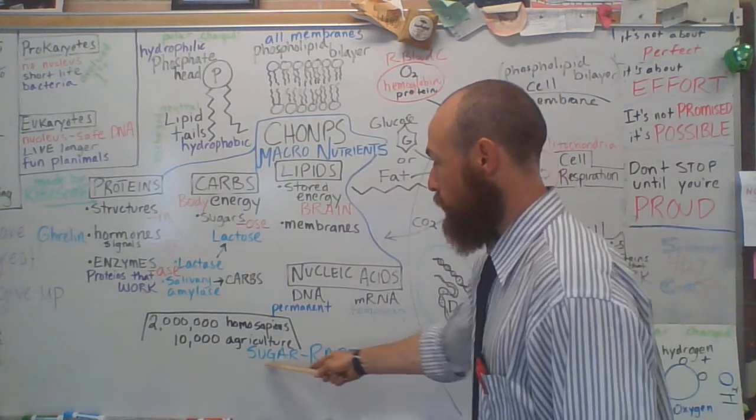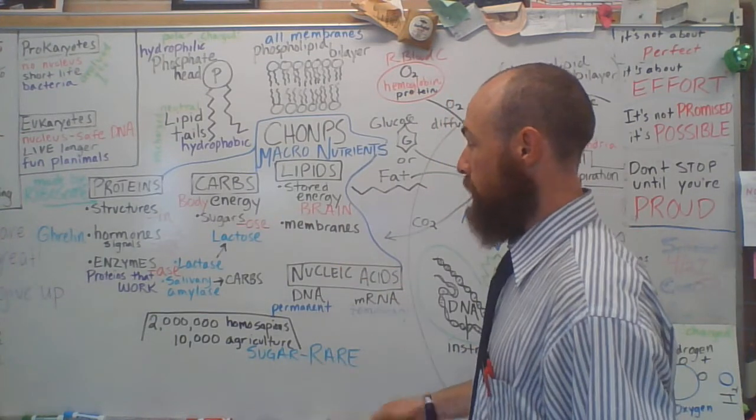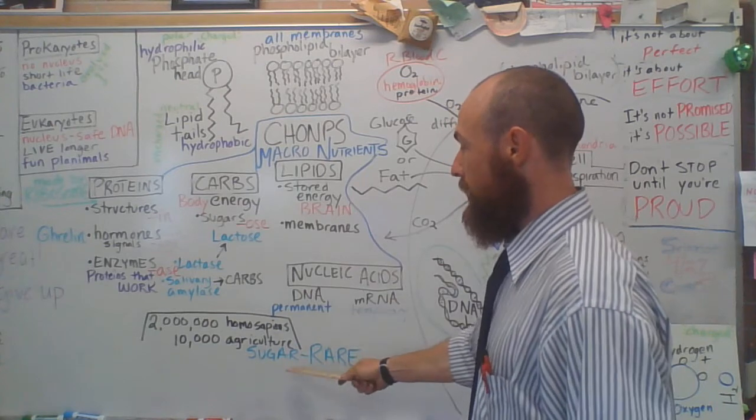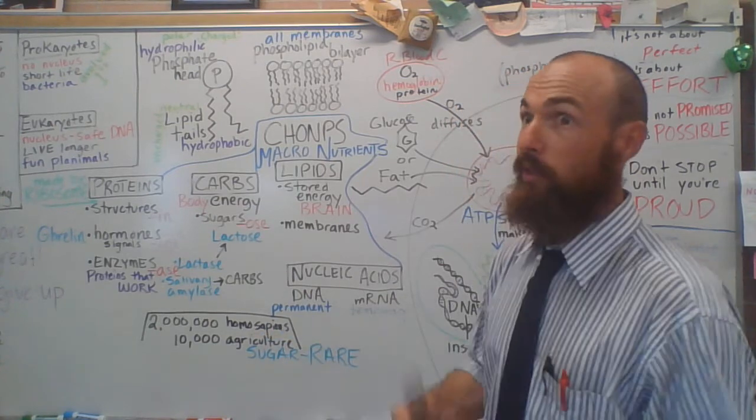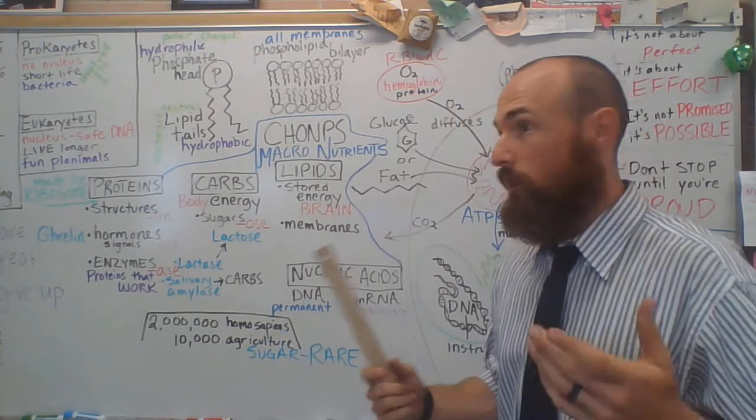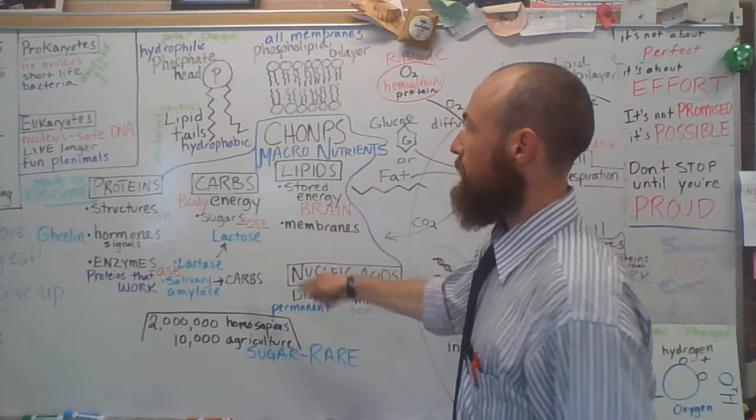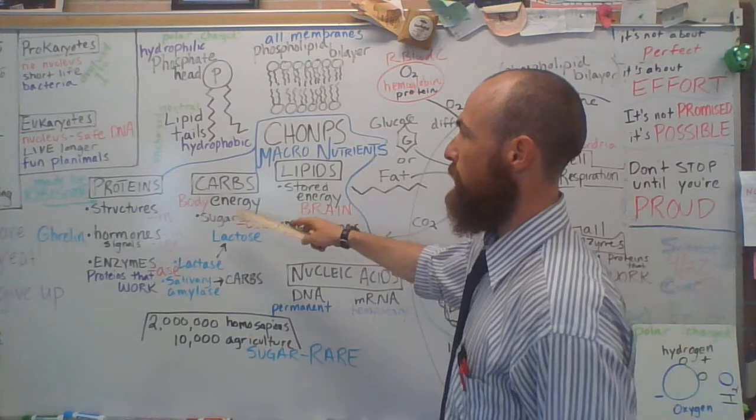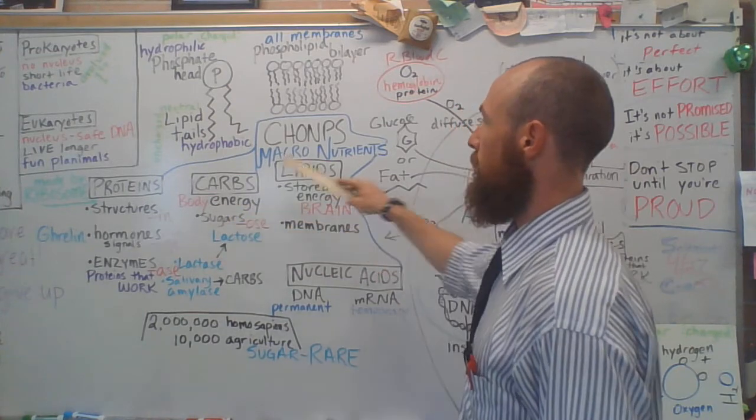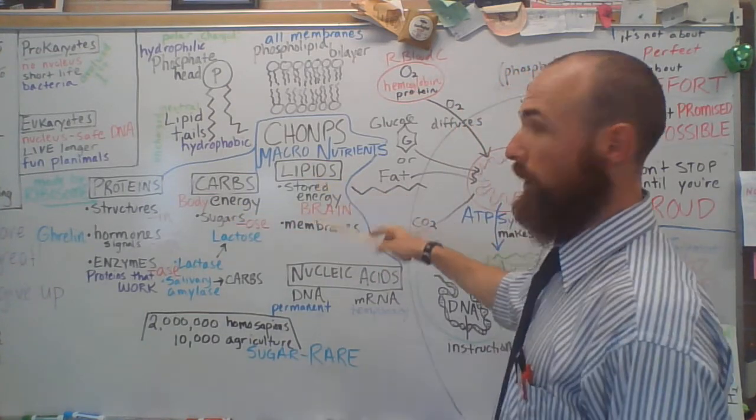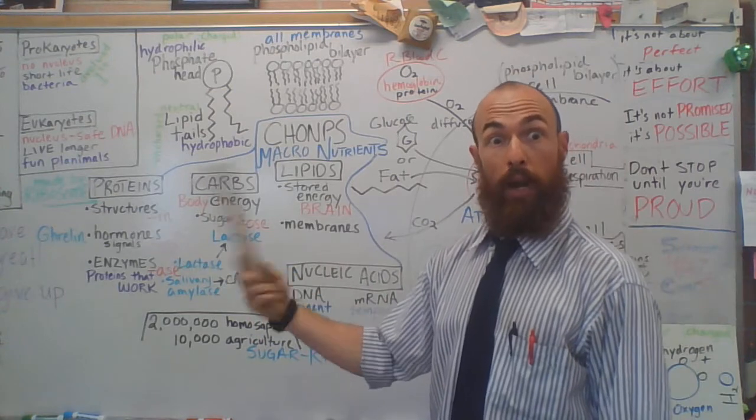For the longest time, sugar was rare for Homo sapiens. That's like finding fruit, finding honey, being able to eat the honey. That is a very rare thing, which is why sugar is so addicting because it's supposed to be rare. It's not supposed to be something that you get three times a day, five times a day, every single day for your entire life. Which is why we have so many problems with sugar and problems with sugar addiction is because the addiction was evolved in Homo sapiens in an environment when sugar was super rare and you'd want to be addicted to that.